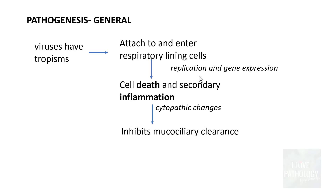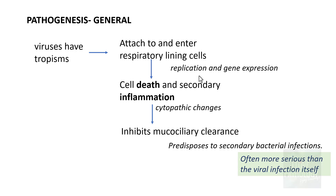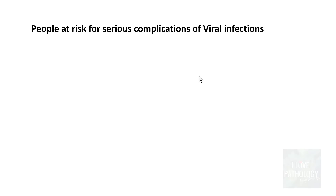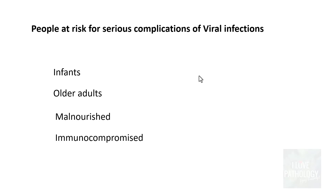Once the cells have died, the protective pseudostratified ciliated columnar epithelium is damaged, leading to inhibition of mucociliary clearance. This predisposes to secondary bacterial infections. Remember, though viral infection causes minimal inflammation itself, it is the secondary bacterial infection which is often more serious than the viral infection. People at risk for serious complications include extremes of age — infants and older adults — malnourished individuals, immunocompromised individuals, and those who consume excessive alcohol.